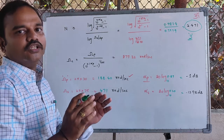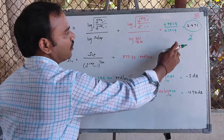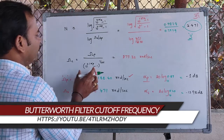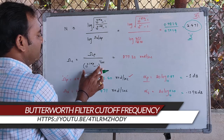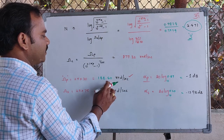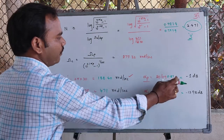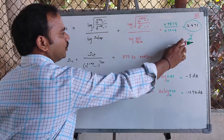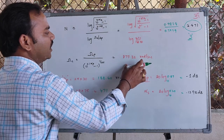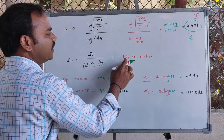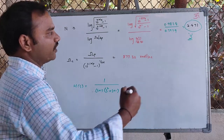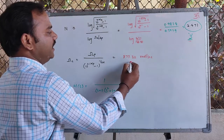For the given specifications, the order of the Butterworth filter is 3. Next we compute the cutoff frequency using the formula, substituting the passband frequency of 188.40 rad/s, passband attenuation of 1 dB, and order n = 3. The cutoff frequency for the given specifications is 277.32 radians per second.